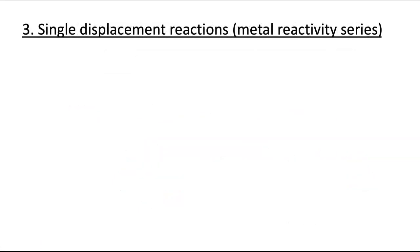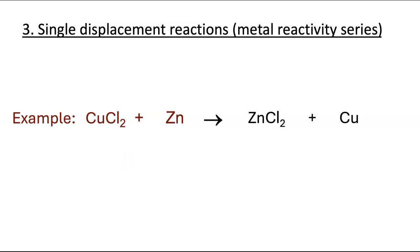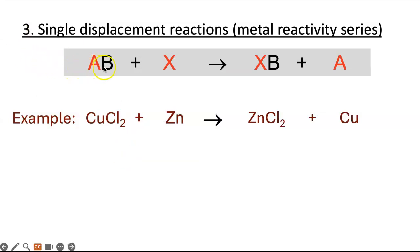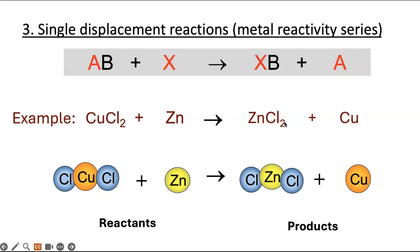In a single displacement reaction, you need to use the metal reactivity series. For example, with copper chloride and zinc: zinc is higher up the reactivity series, so it can displace copper and form zinc chloride. Copper then precipitates out of solution as a solid. The generalized equation is AB + X → XB + A, and the mole ratio is 1:1:1.